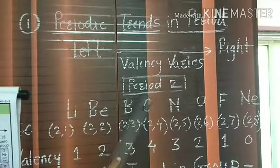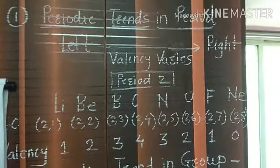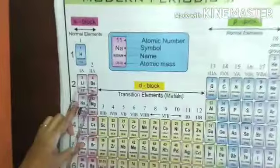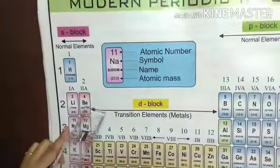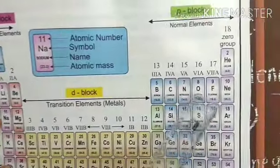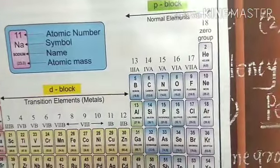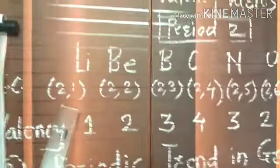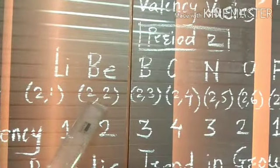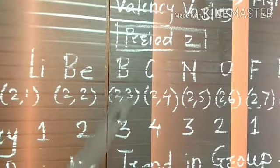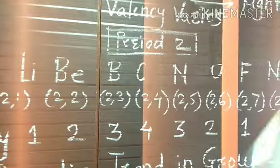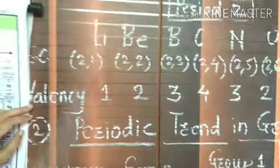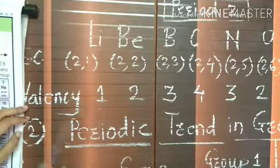Let us consider period number two. In period number two, there are different elements: lithium, beryllium, boron, carbon, nitrogen, oxygen, fluorine, and neon. The electronic configurations are lithium 2,1; beryllium 2,2; boron 2,3; and so on.